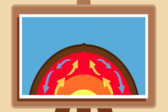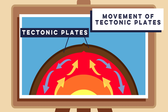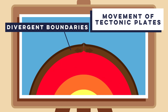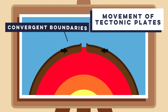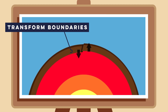Step 3 is movement of tectonic plates. The convection currents in the mantle create drag on the overlying tectonic plates, causing them to move. These plates can move away from each other, move towards each other, or slide past each other.